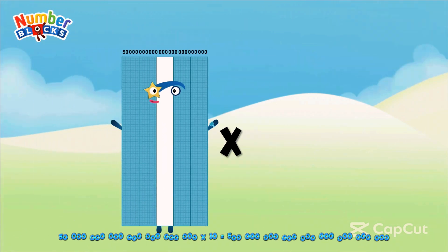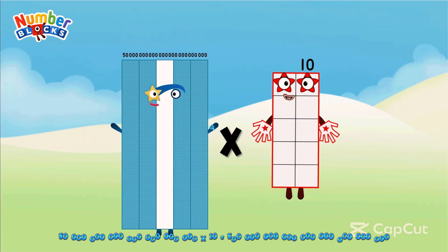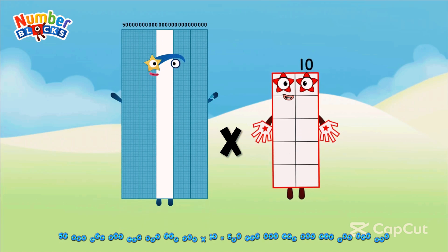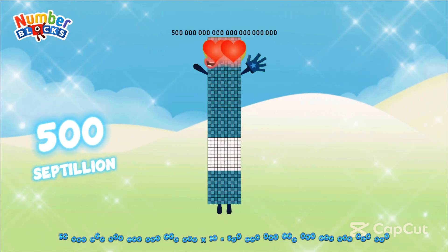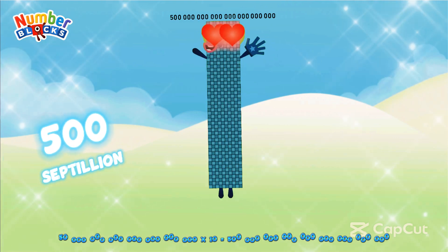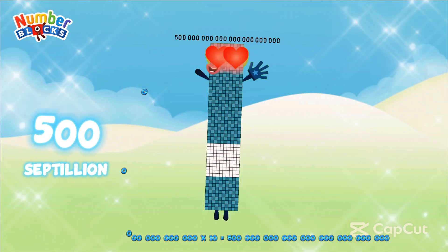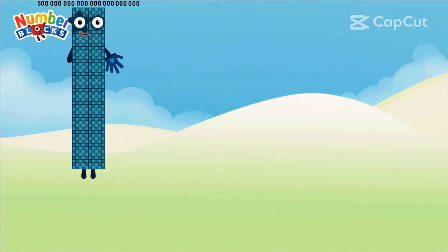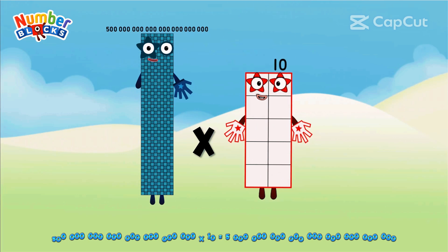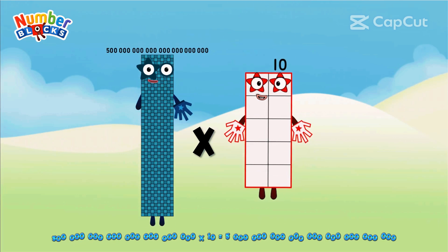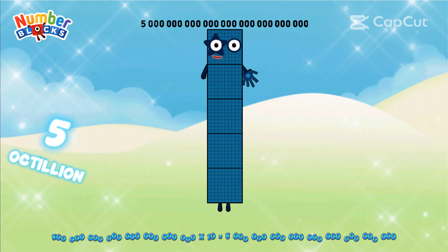50 septillion multiplied by 10 equals 500 septillion. 500 septillion multiplied by 10 equals 5 octillion.